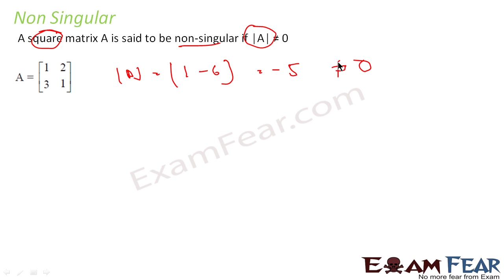The reason why we are studying singular and non-singular matrices is because when we want to find the inverse, the inverse exists only if the matrix is non-singular. Where the determinant is 0, the inverse doesn't exist. We use these mathematical terms so that instead of saying 'determinant is 0' or 'determinant is not 0,' we simply say singular or non-singular matrix — which is more precise and concise.